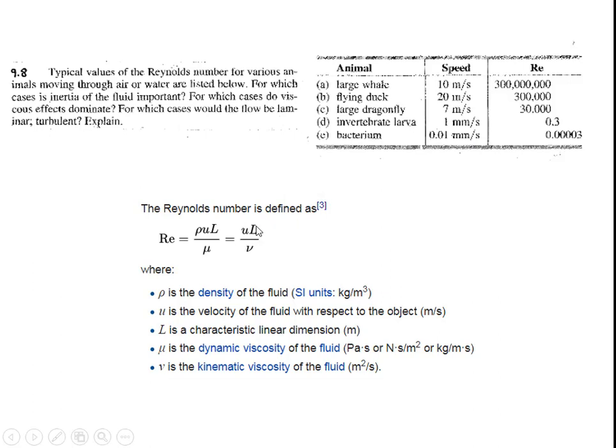Now we have an extreme example: larva. It's at very slow speed, 1 mm per second, and its length will be very low. That makes the numerator of the Reynolds number very small. This is 0.3. First of all, this is a viscous dominating flow where viscous effects dominate. There is no boundary layer at all, and on the larva's body you have a large area in which viscosity is dominating.